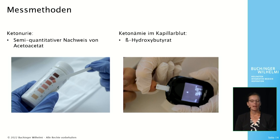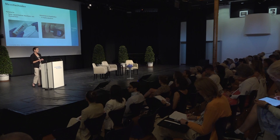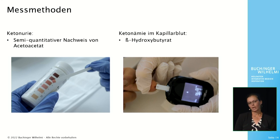For everyday clinical practice, there are two measurement methods that can be easily performed. First, ketonuria can be tested using urine test strips. The nitroprusside reaction is a semi-quantitative detection for acetoacetate in urine. Statements about the level of ketosis are limited because a color change only indicates different categories, from traces to high levels.